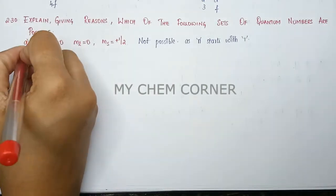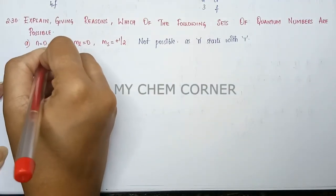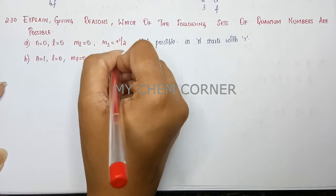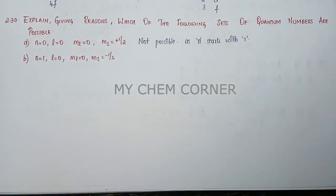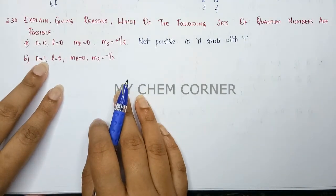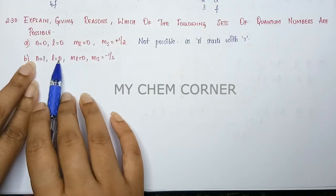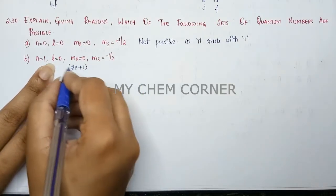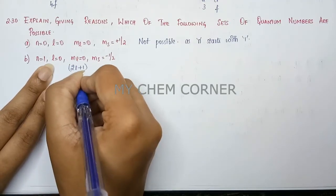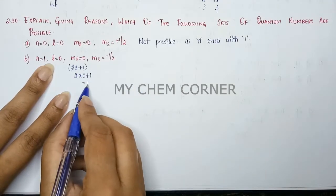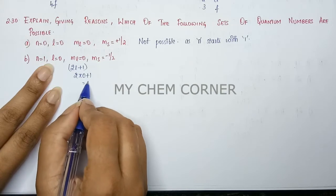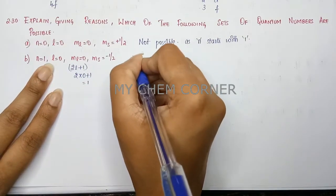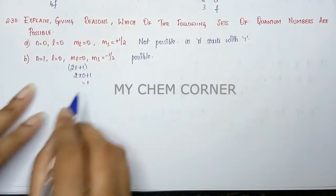The second question: n is equal to one, l is equal to zero, ml is equal to zero, and ms is equal to minus half. When n is equal to one, l will be zero. When l is equal to zero, the formula for the number of ml values is 2l plus one, which gives 2(0)+1 = 1, meaning ml can only be zero. So ml equals zero and spin is minus half — this particular orbital is possible.